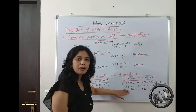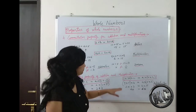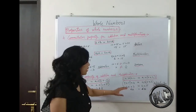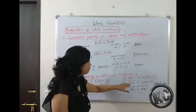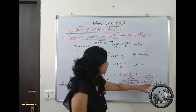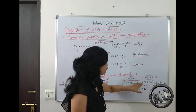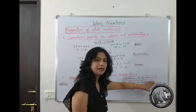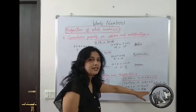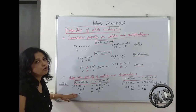This associative property is also true for multiplication. In multiplication, for 4 multiplied by 5 multiplied by 3, you can group 4 and 5 together: 4 times 5 is 20, then 20 times 3 gives 60. Or you can group 5 and 3 together: 5 times 3 is 15, then 4 times 15 also gives 60. The answer is the same. So in addition and multiplication, you can group numbers according to your convenience.